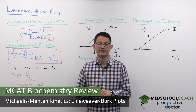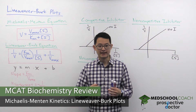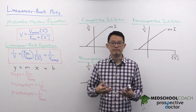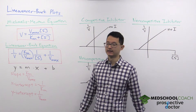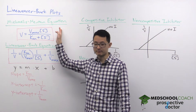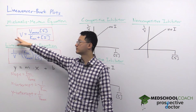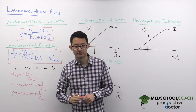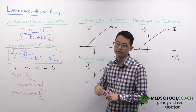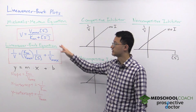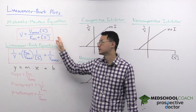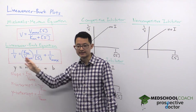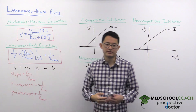In this video we're going to go over Lineweaver-Burk plots. Lineweaver-Burk plots is essentially another way of representing the data that we saw with Michaelis-Menten saturation curves. As a quick reminder, the Michaelis-Menten equation states that reaction velocity is equal to maximum reaction velocity times substrate concentration over Km plus the substrate concentration. The Lineweaver-Burk equation is actually just derived from the Michaelis-Menten equation — if you simply take the reciprocal, you can see it's just the same equation presented another way.